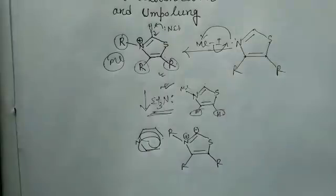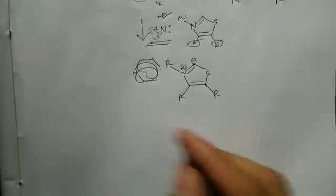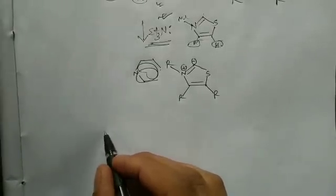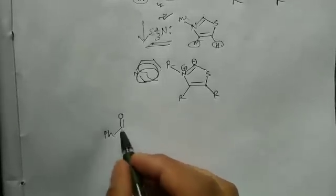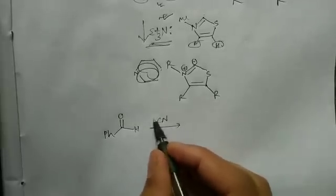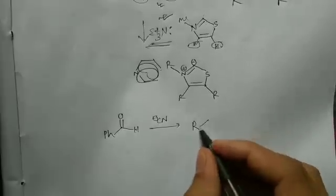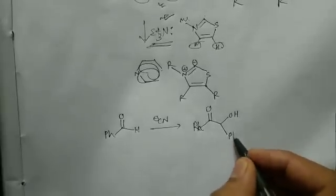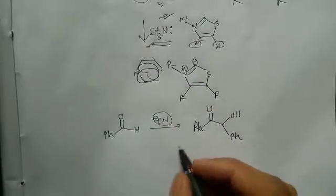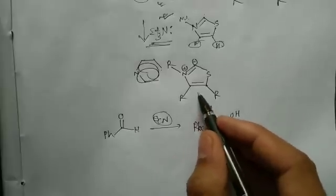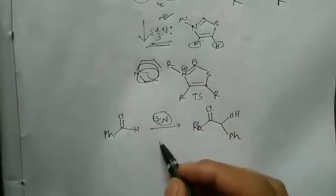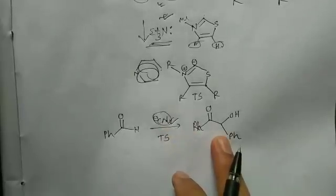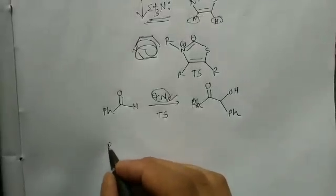Now let us come to the applications of this reagent. If you remember the well-known benzoin condensation — if you consider benzaldehyde, we know that cyanide catalyzes this reaction to produce benzoin. The same reaction can be done with the thiazolium salt, represented as TS. So instead of using cyanide, we can use the thiazolium salt to carry out the same benzoin condensation.